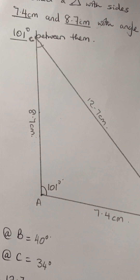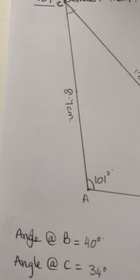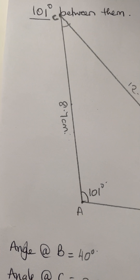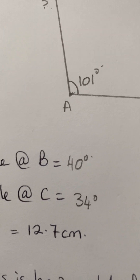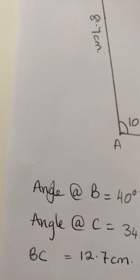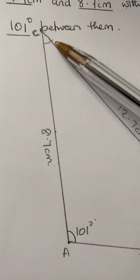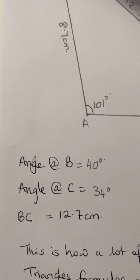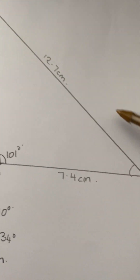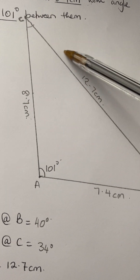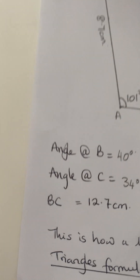They can just ask you to draw the triangle, but they can also ask you to draw and measure the angles. When I measured the angle at B I got 40 degrees, and the angle at C gave me 34 degrees. The length from B to C measured with the ruler gave me 12.7 centimeters.